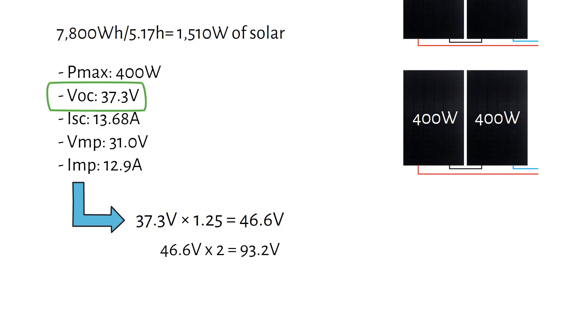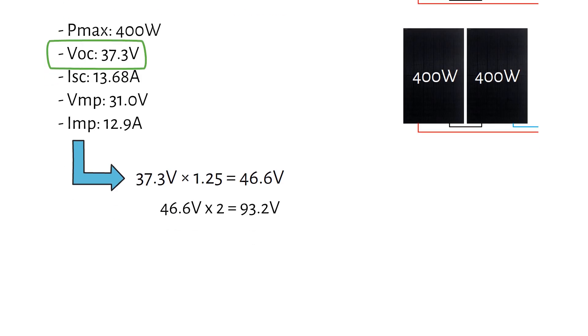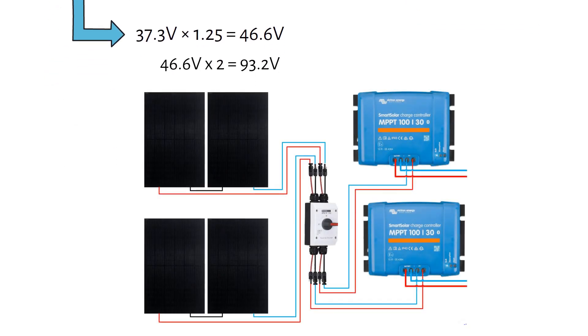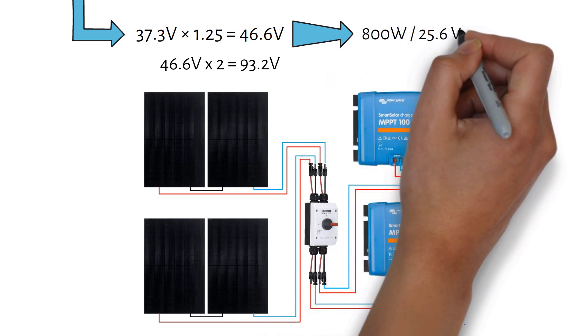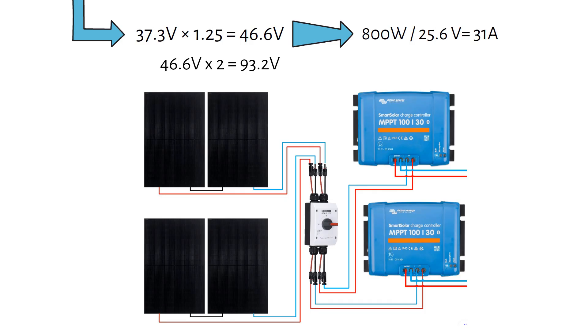With a 100V MPPT, I can run two panels in series and use two MPPTs. So that's 800W per MPPT. At 25.6V that's 31A. So I'm using the Victron Smart Solar 130, not the blue solar.